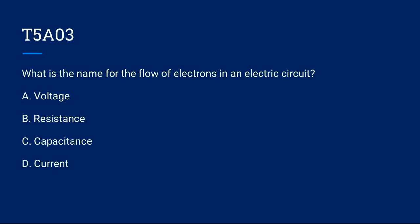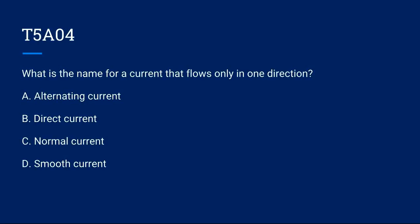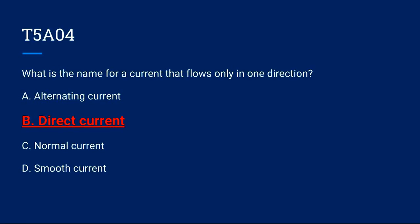T5A03, which is the name for the flow of electrons in an electrical circuit? A. Voltage, B. Resistance, C. Capacitance, or D. Current. The correct answer is D. Current. T5A04, which is the name for a current that flows only in one direction? A. Alternating current, B. Direct current, C. Normal current, or D. Smooth current. The correct answer is B. Direct current.